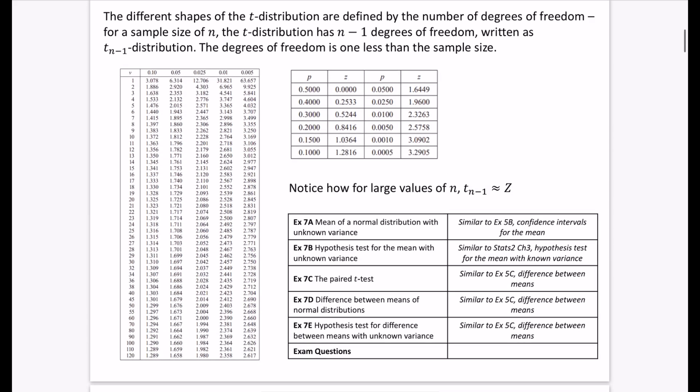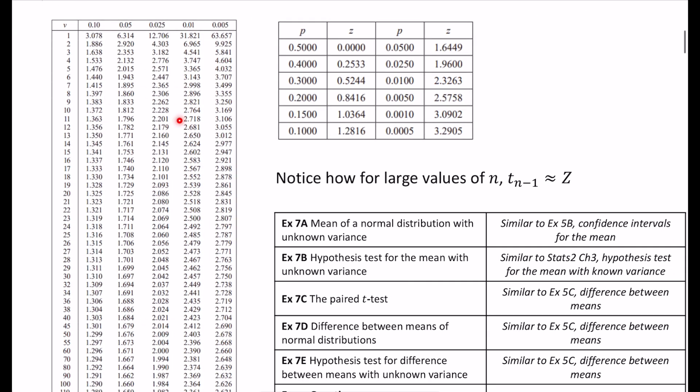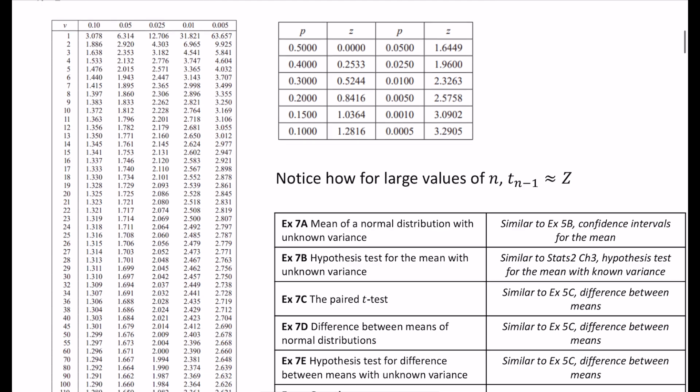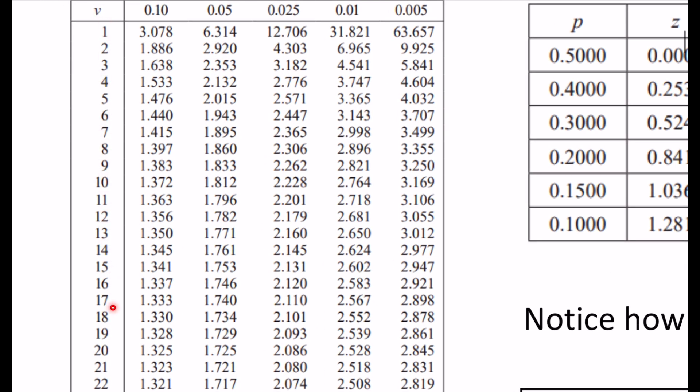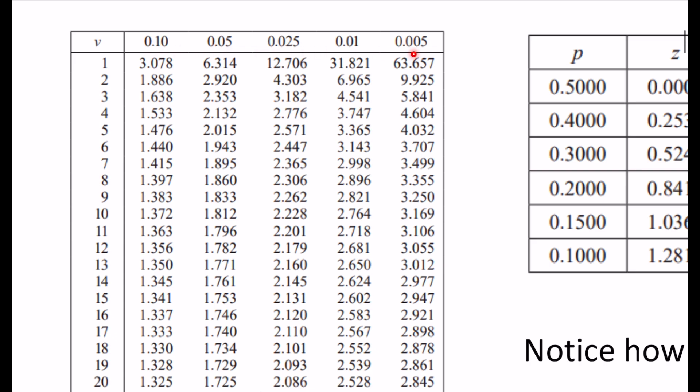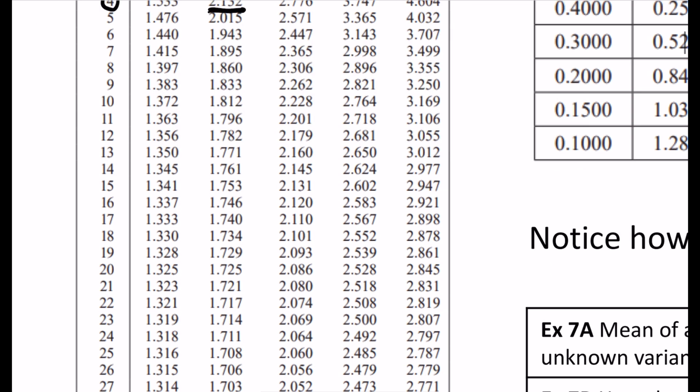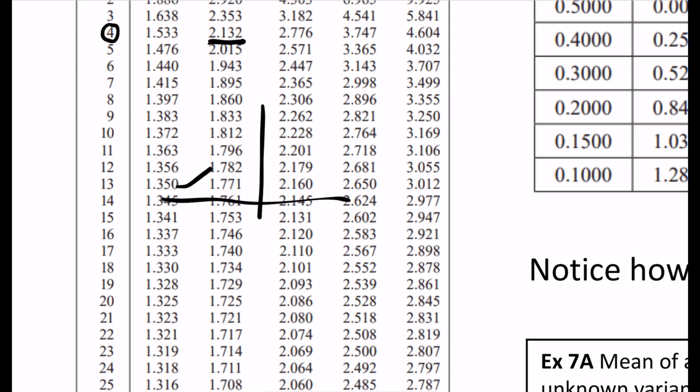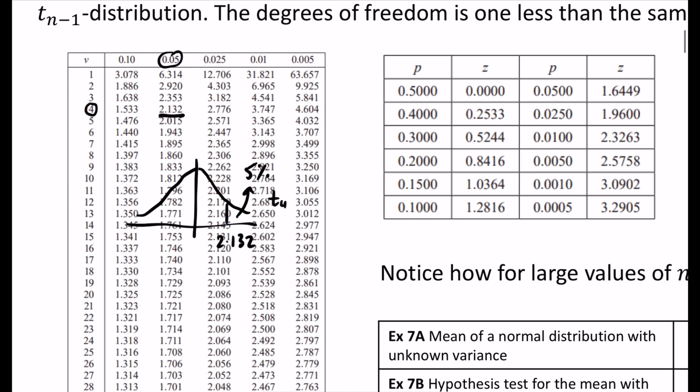Before we actually do some calculations with this, I just wanted to show you the part that gets given to you in the textbook. What you'll see is the degrees of freedom are down the side, and then we have the probabilities that it exceeds a certain value along the top. So I could say for four degrees of freedom, the probability that it is bigger than 2.132 is 5%. I am saying that for this t distribution, the t_4 distribution, the probability it's bigger than 2.132 is 5%. We're getting used to how we read these tables.